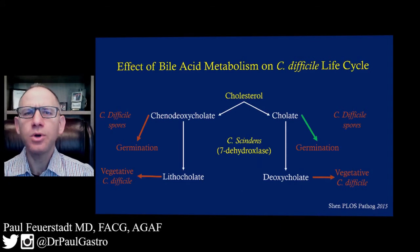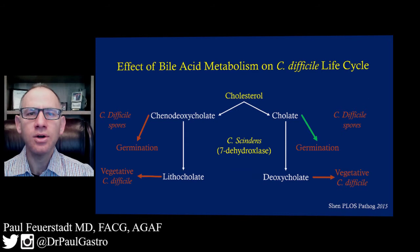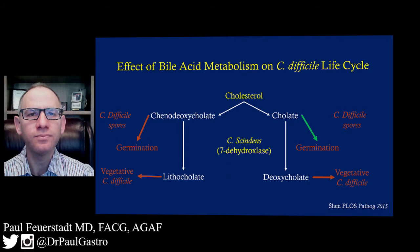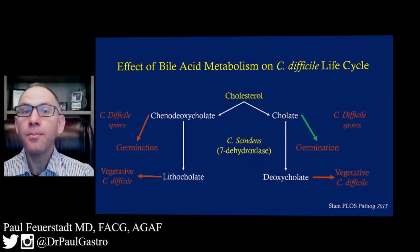There are two main primary bile salts: cholate and chenodeoxycholate. Cholate enhances germination and is an up-switch for germination, whereas chenodeoxycholate is an inhibitor of germination. As they traverse the bowel and pass through the small bowel and into the colon, they are converted from primary bile salts to secondary bile salts.